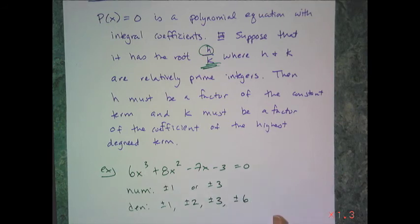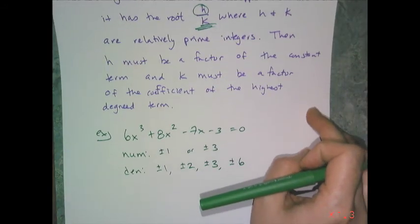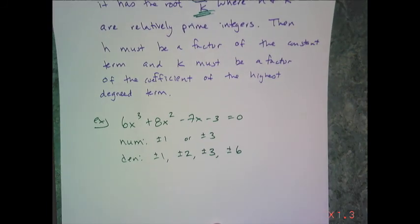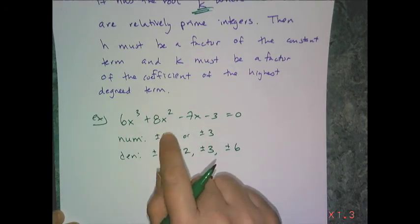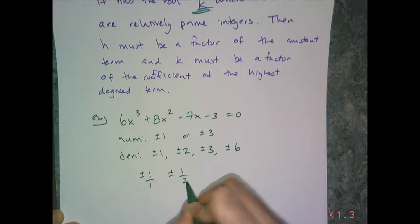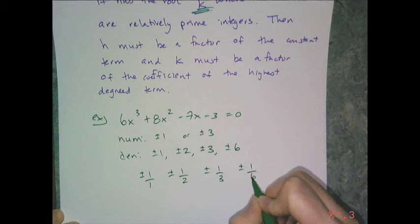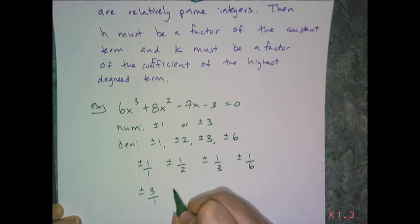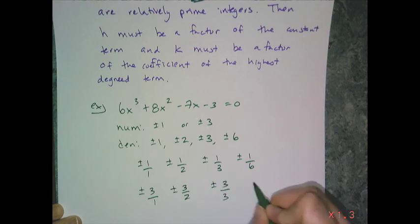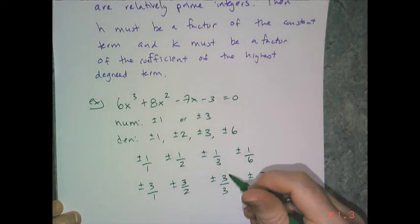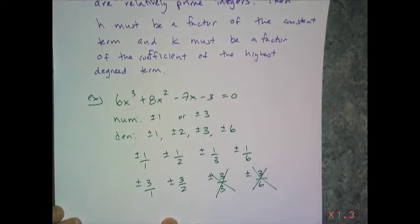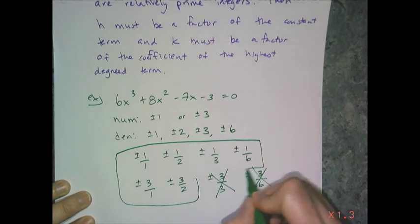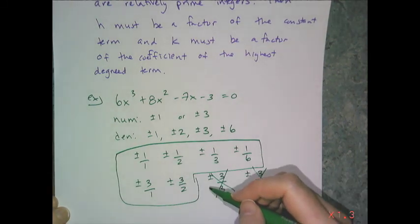The rational root theorem says that if there exists a rational root, it's going to be one of these ratios: plus or minus 1/1, 1/2, 1/3, 1/6 — from numerator 1 over all denominators — or plus or minus 3/1, 3/2, 3/3, 3/6. Crossing off duplicates like 3/3 = 1 and 3/6 = 1/2, this gives me 6 unique values, or 12 counting plus or minus. You can do synthetic division to test these out pretty quickly.